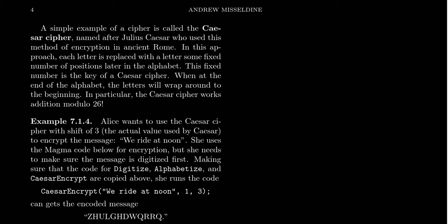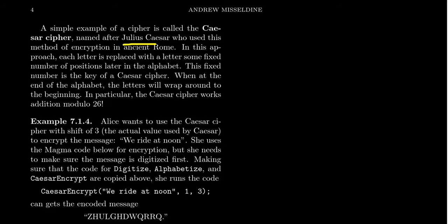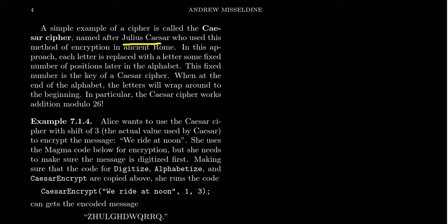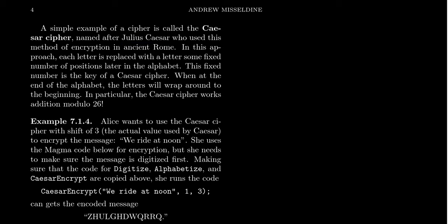One of the earliest examples in history of symmetric key cryptography, in a more modern sense, is what's commonly referred to as the Caesar cipher, named after Julius Caesar himself back in ancient Rome. The idea is you write down a phrase in Latin, and then shift the letters in the alphabet by some amount, say one.